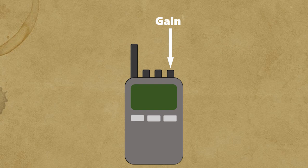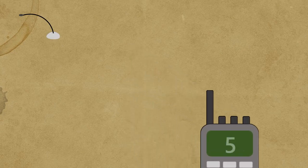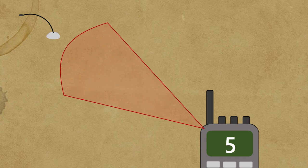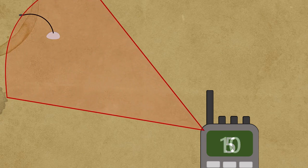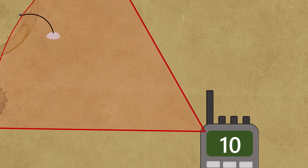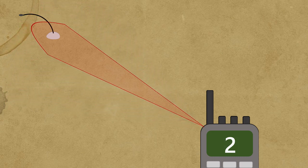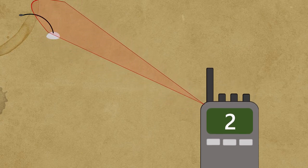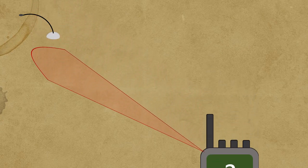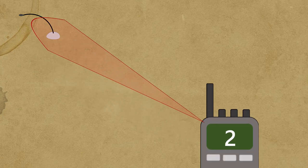Volume and frequency are very straightforward, but gain can often be confusing to those new to radiotelemetry. For all intents and purposes, gain is how sensitive your receiver is to your selected frequency. Higher gain values allow you to search from much farther away, but also increase the angle of your search radius. Therefore, when you're tracking your target animal, it's best to keep your gain at the lowest value where you can still hear the beeps on your receiver. This reduces the area where your receiver can pick up signals, allowing you to better pinpoint where your target animal is.